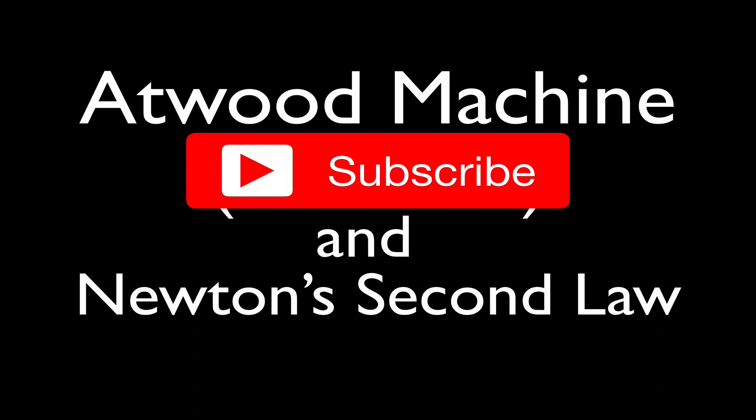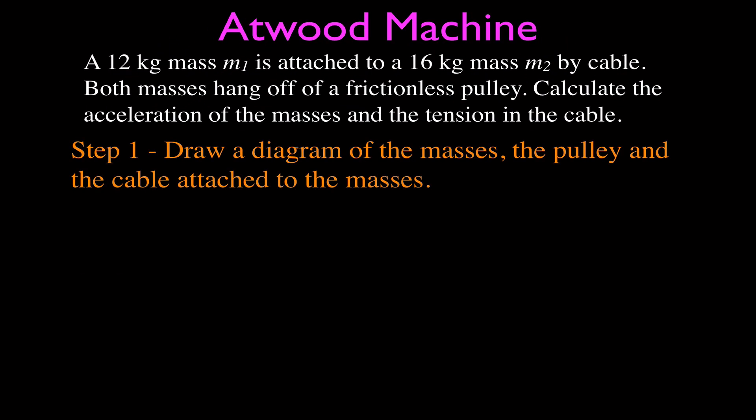I've made some additional videos for Newton's Second Law, which you can link to in the upper right-hand corner of this video. For this video, we are going to talk about the Atwood Machine, and we're going to be calculating the acceleration of the two masses and the tension in the cable. The problem is we have a 12-kilogram mass, designated as M1, attached to a 16-kilogram mass, designated as M2, connected by a non-elastic cable over a frictionless pulley.